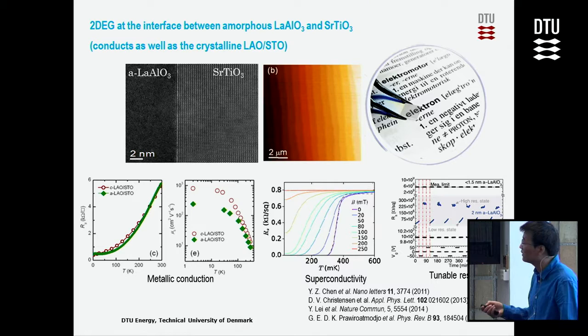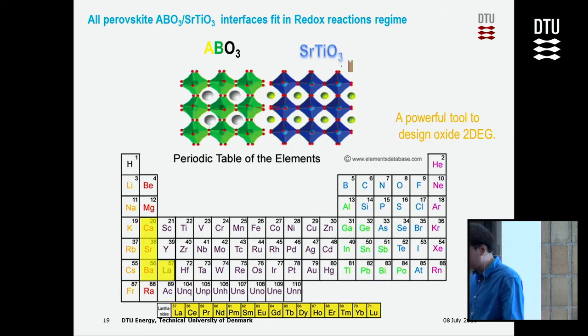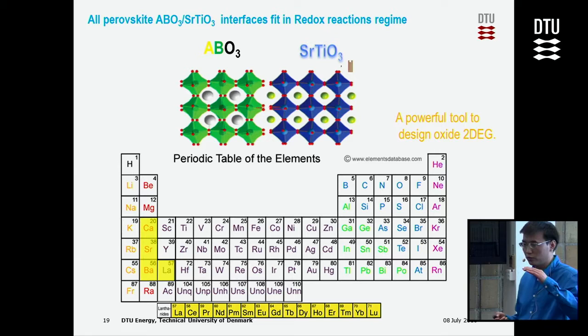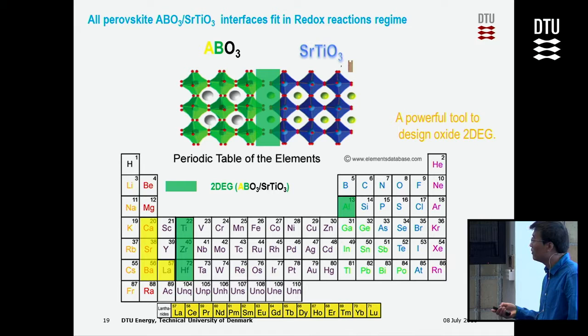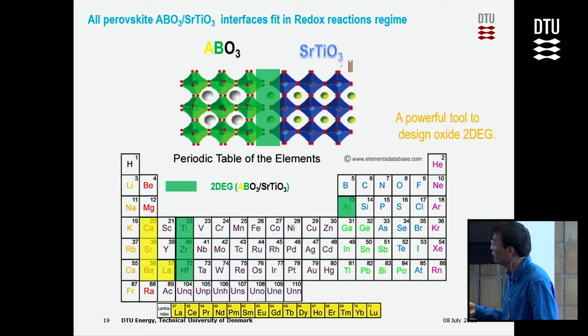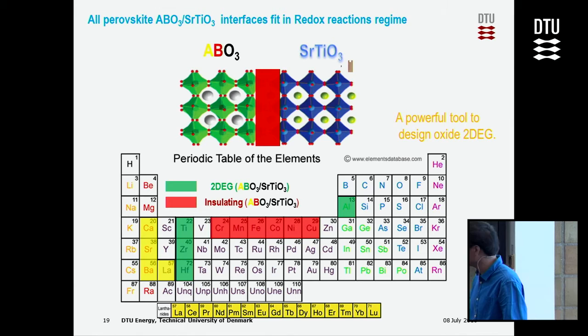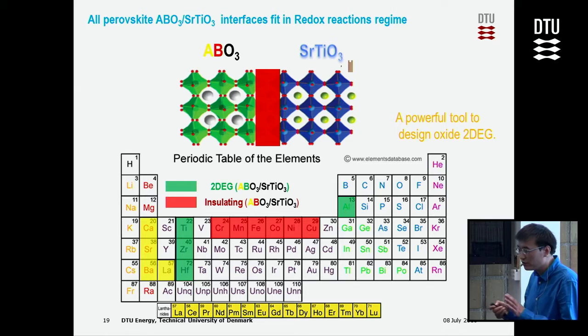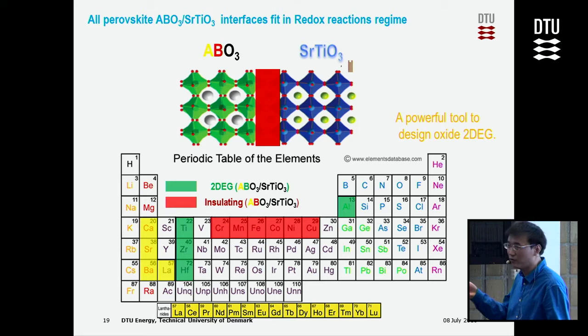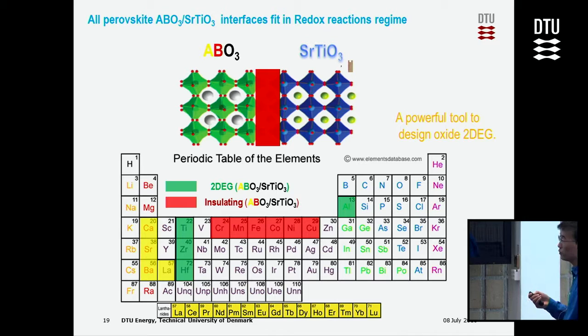Later we did a lot of work on this and found the conductivity of this amorphous structure is as good as the crystalline ones — it's metallic conducting. It can also be controlled by a gate voltage, and it is also transparent. More surprisingly, when we summarized all the literature reported on oxide interfaces, we found all conducting interfaces fit within an element reduction region. If you use elements outside this reduction region, the interface is insulating. So far we have not found a system that doesn't fit our model, which provides a very powerful tool to design conducting oxide interfaces.